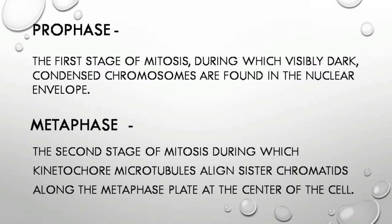Prophase: the first stage of mitosis, during which visibly dark condensed chromosomes are found in the nuclear envelope. Metaphase: the second stage of mitosis, during which kinetochore microtubules align sister chromatids along the metaphase plate at the center of the cell.